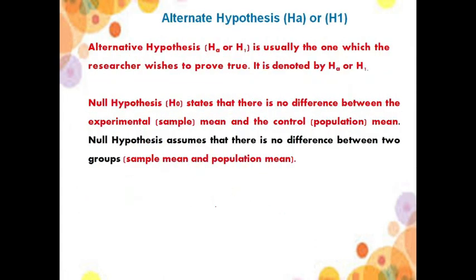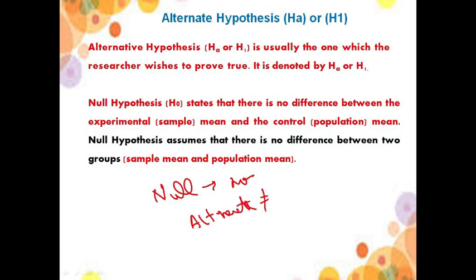Alternate hypothesis is usually the one which the researcher wishes to prove, depicted by HA or H1. The null hypothesis says there is no difference between the experimental sample mean and the controlled population mean. For alternate hypothesis, there are three things to keep in mind: first, there is no direction of difference; second, mean 1 is less than mean 2; or third, mean 1 is greater than mean 2.